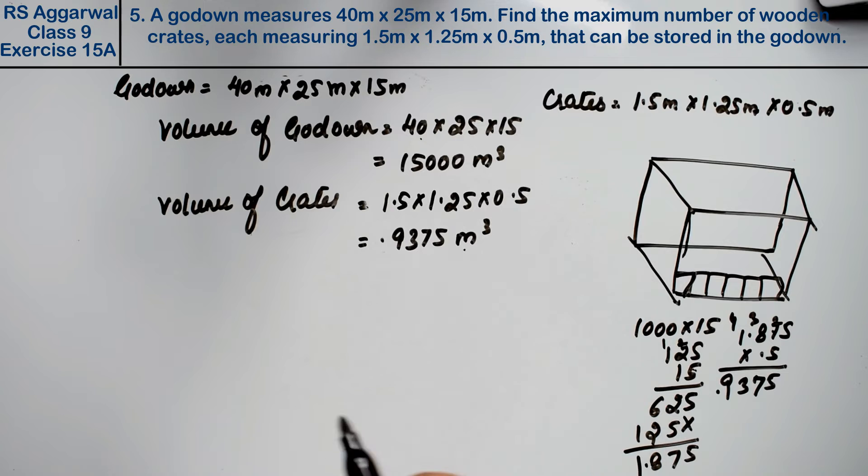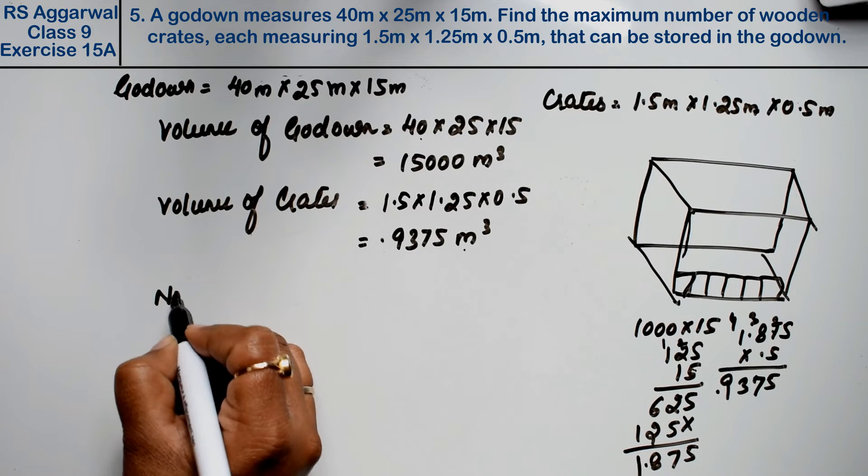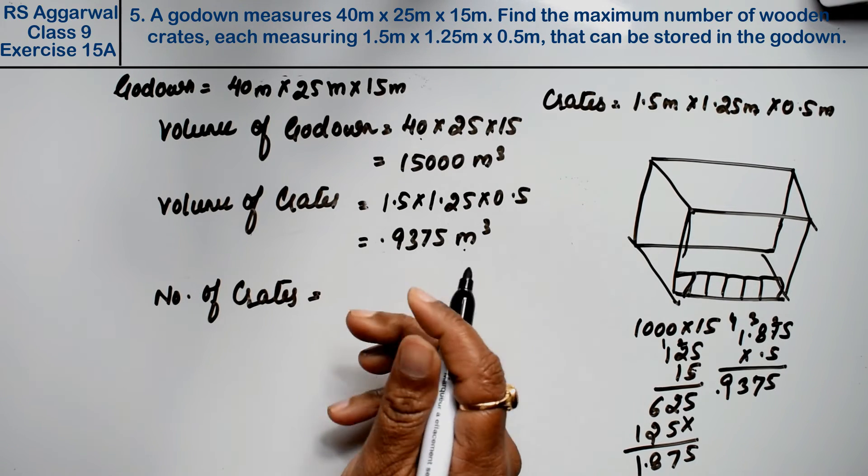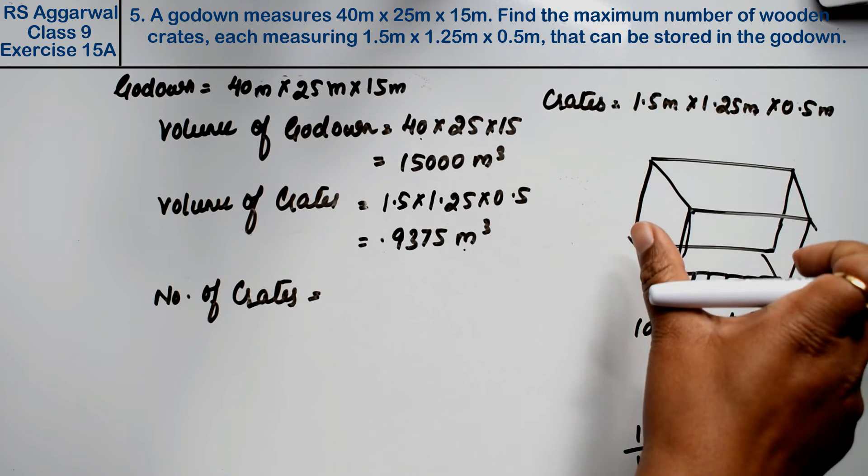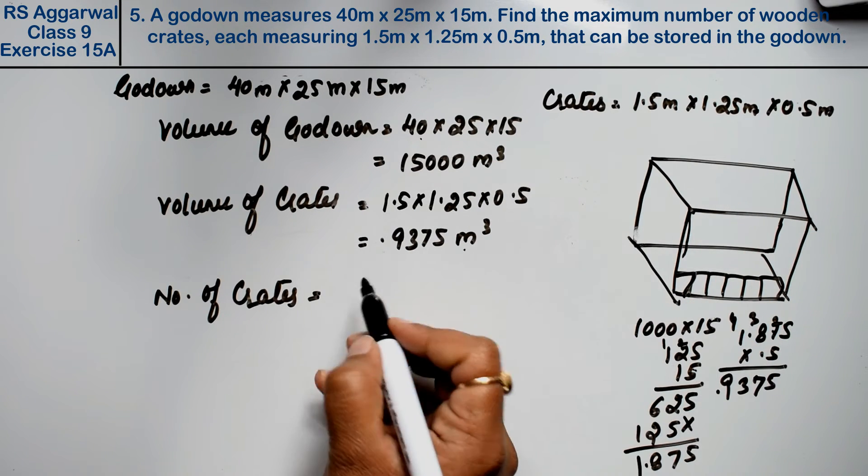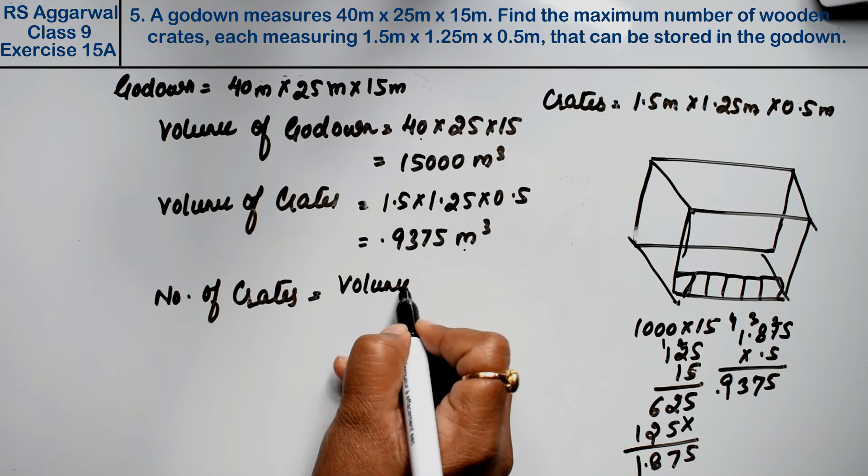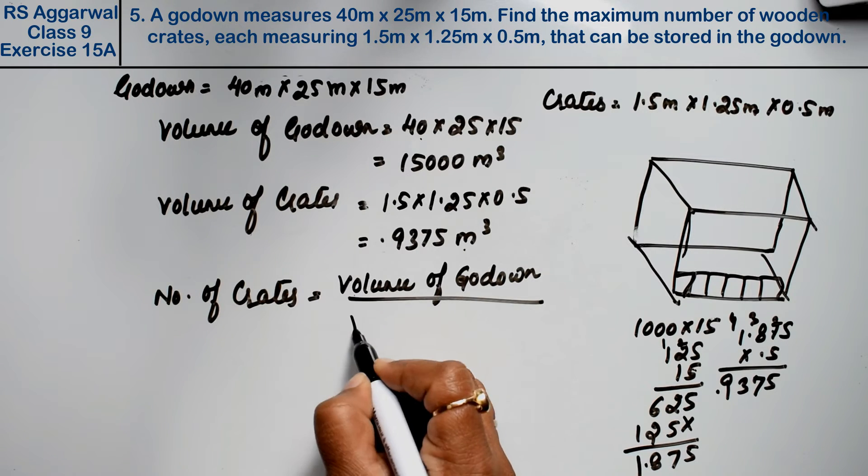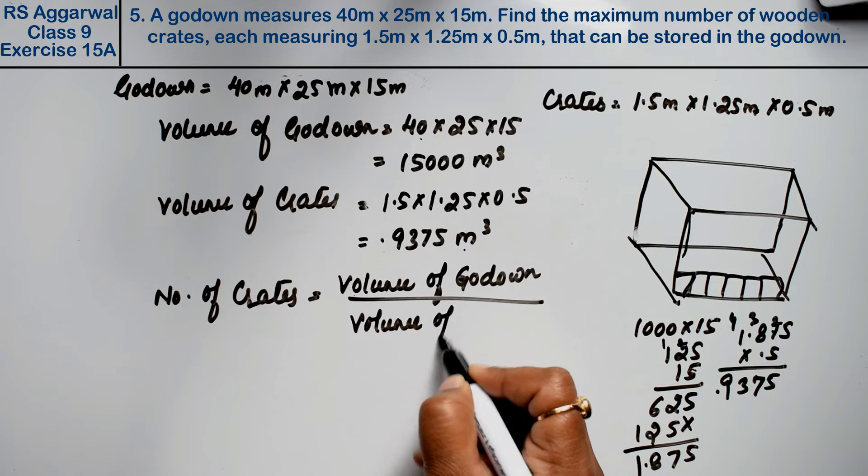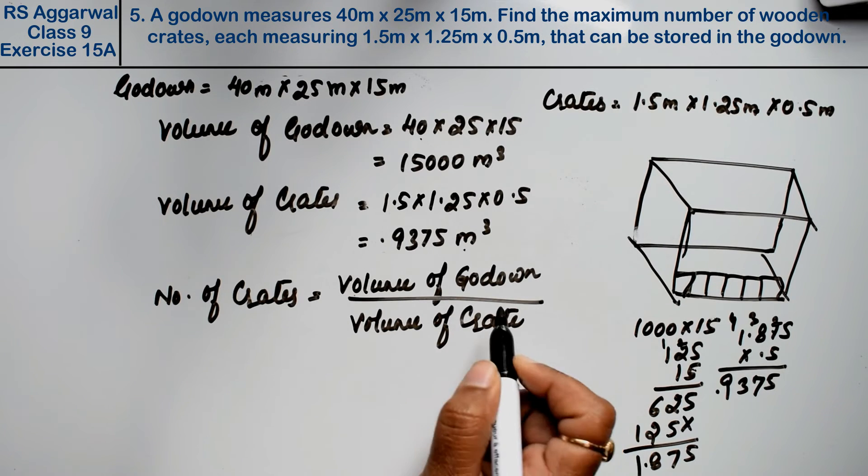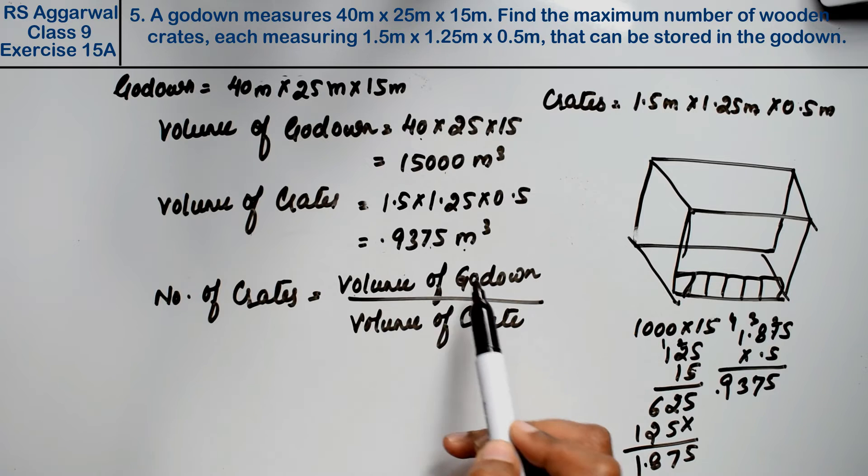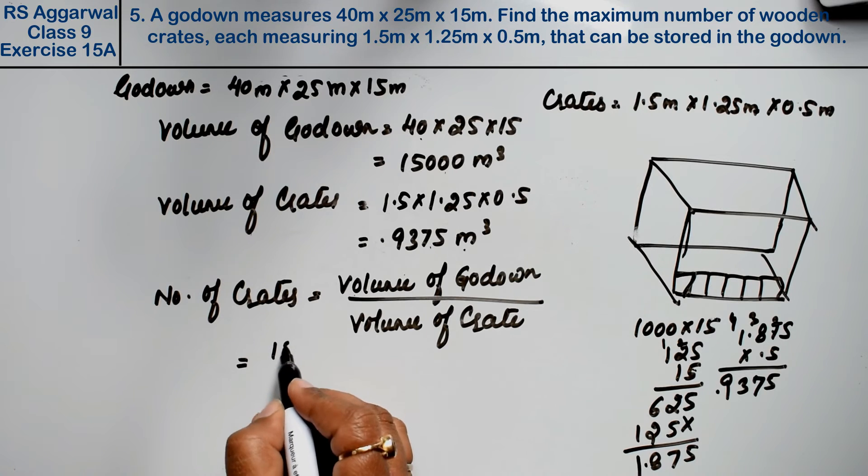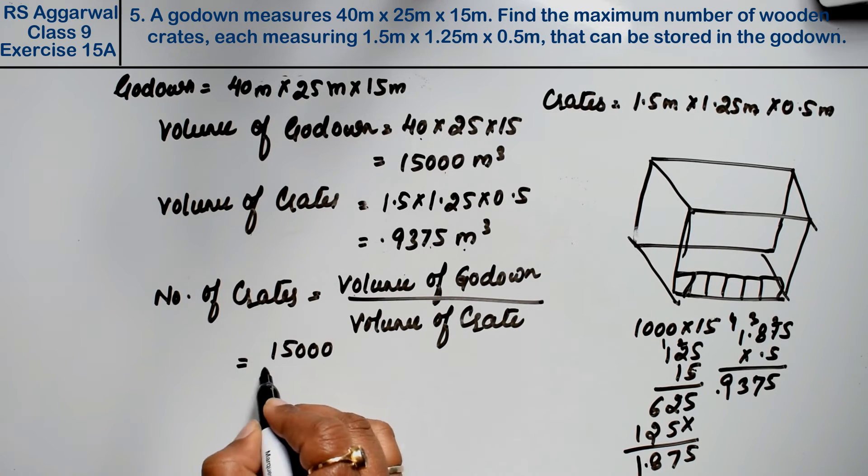Now see, the units are the same. To find the number of crates, we divide the large volume by the small volume. Volume of godown divided by volume of crates. Friends, if you want, you can divide directly without multiplying first—it's your choice. This is the volume of godown divided by crates.